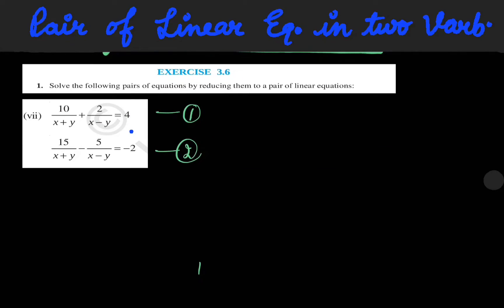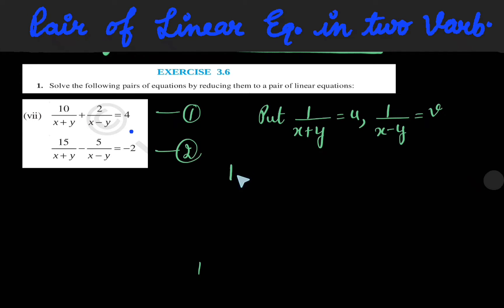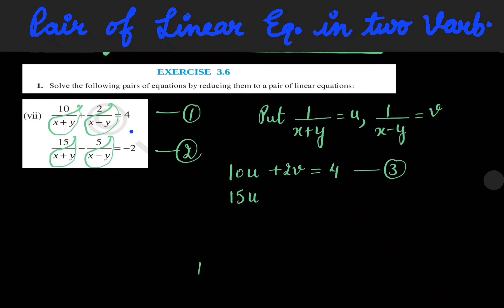In order to reduce this equation, we will put 1 over (x plus y) equal to u and 1 over (x minus y) equal to v. So equation 1 becomes 10u plus 2v is equal to 4. This is equation number 3. Equation 2 becomes 15u minus 5v is equal to minus 2. This is equation number 4.